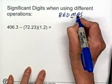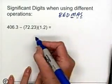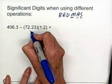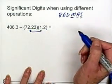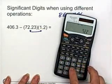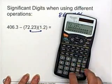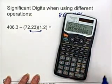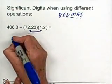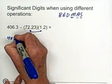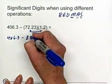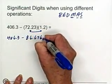Multiplication comes before addition and subtraction. Here we have multiplication and subtraction, so we need to do this multiplication before we do our subtraction. So we have 72.23, we're going to multiply that by 1.2, and that gives us 86.676. So this becomes 406.3 minus 86.676.